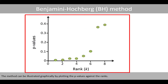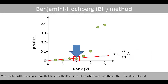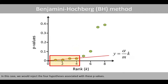The method can be illustrated graphically by plotting the p-values against the ranks. We can add a cutoff line that goes through the origin, with the slope equal to alpha divided by m. The p-value with the largest rank that is below the line determines which null hypotheses should be rejected. In this case, we will reject the four hypotheses associated with these p-values.